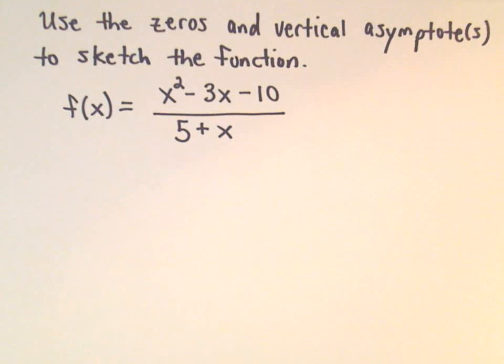Okay, here we're going to graph a rational function by using zeros and vertical asymptotes to help us pick out some important features. And then we'll also just plot a few extra points to see what happens.